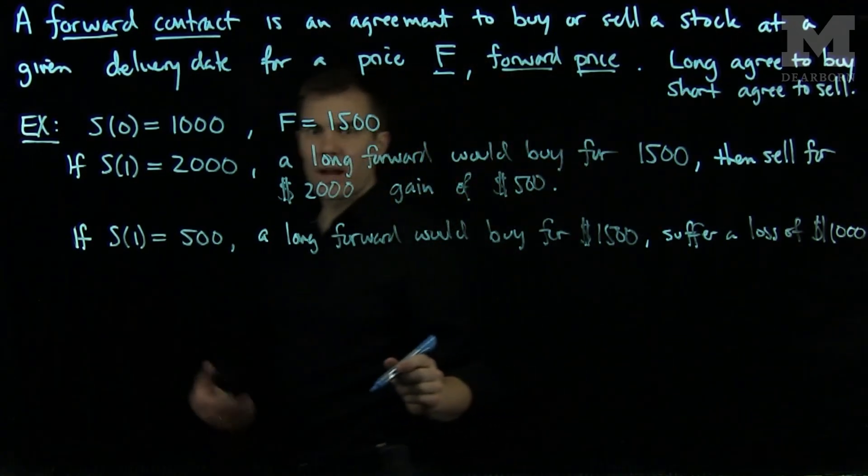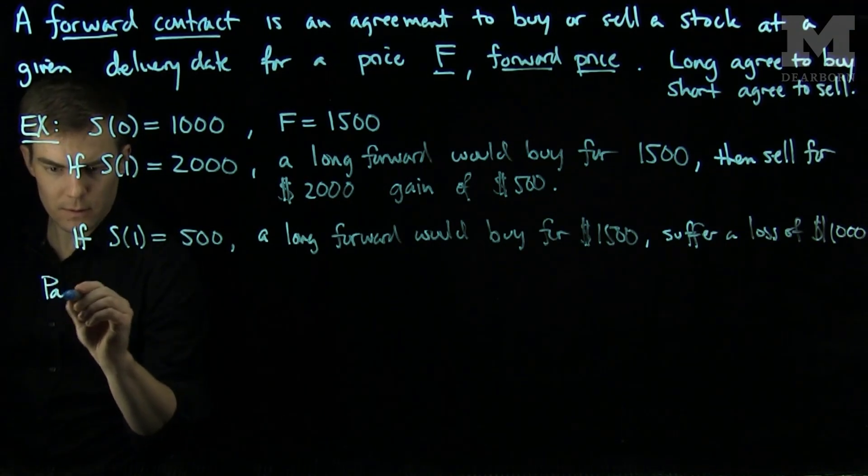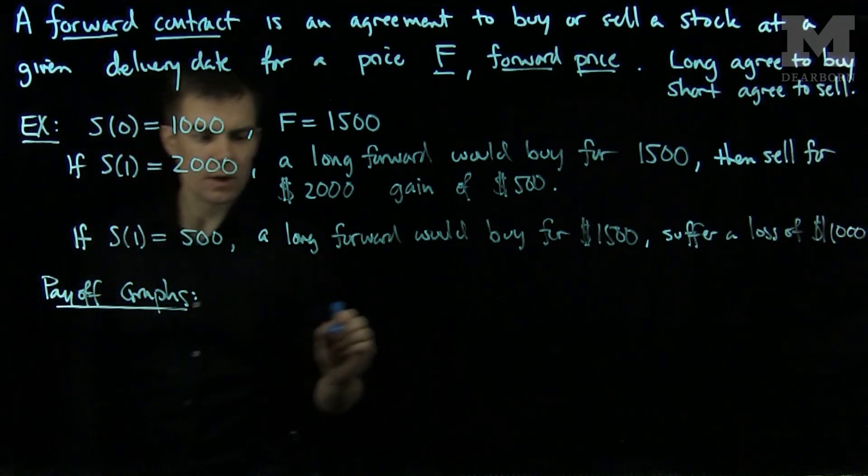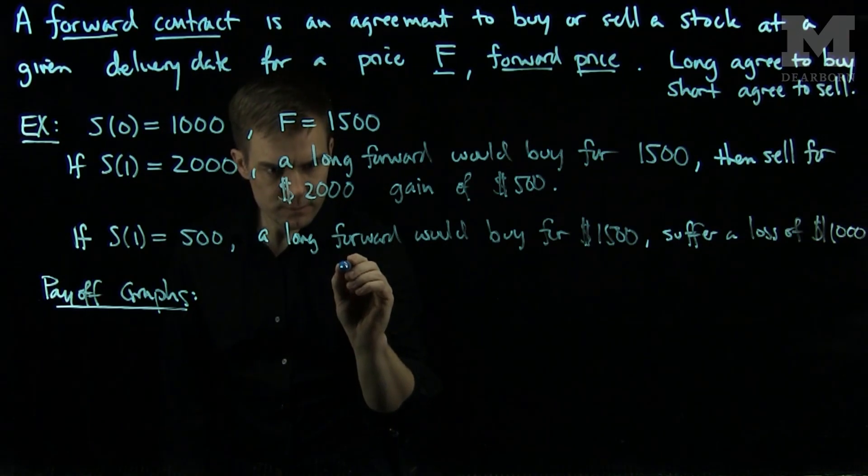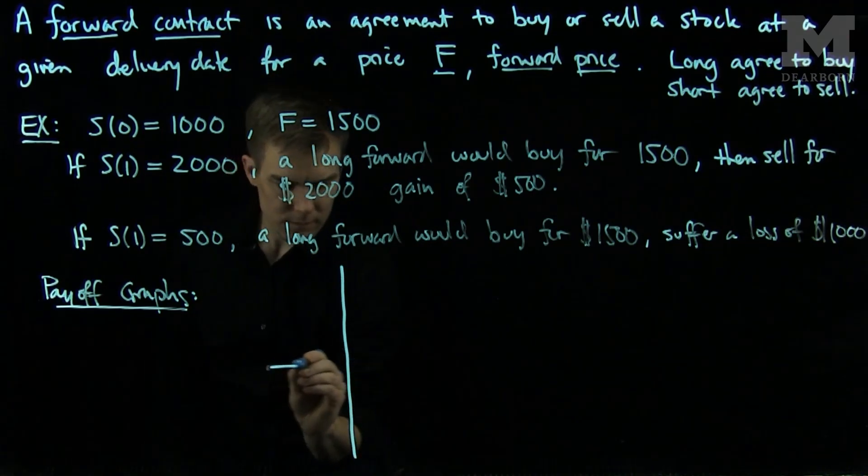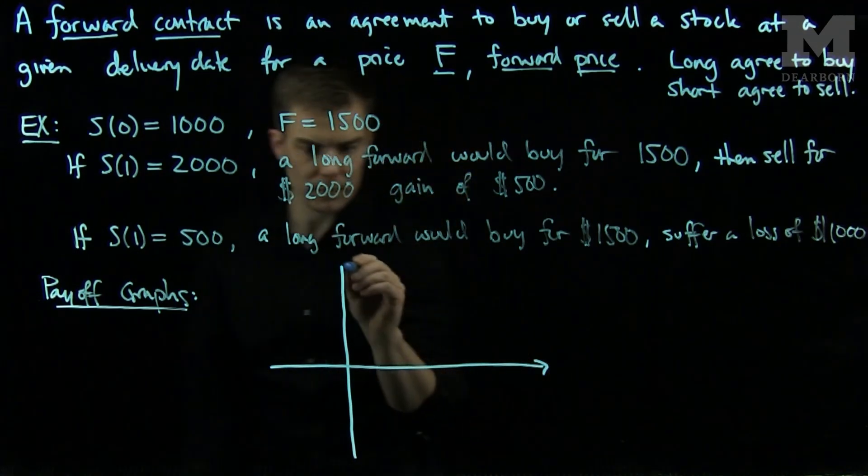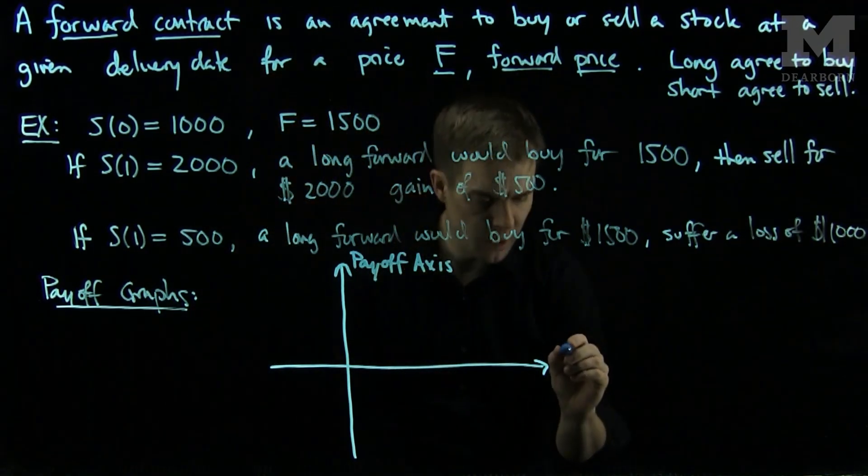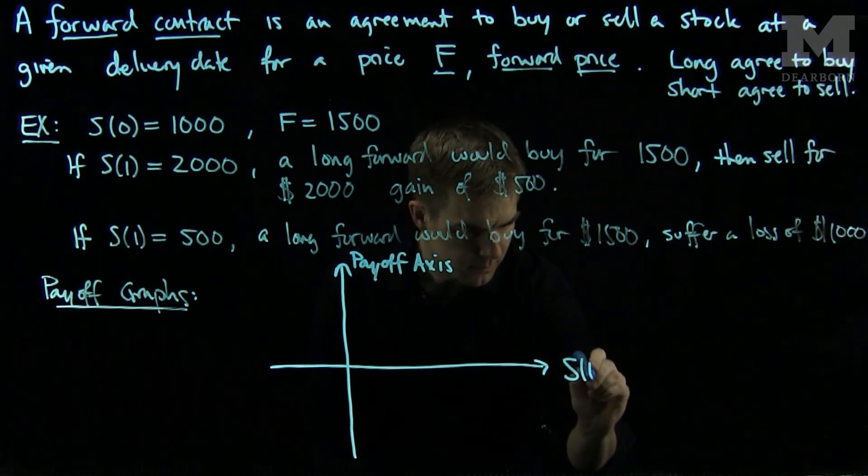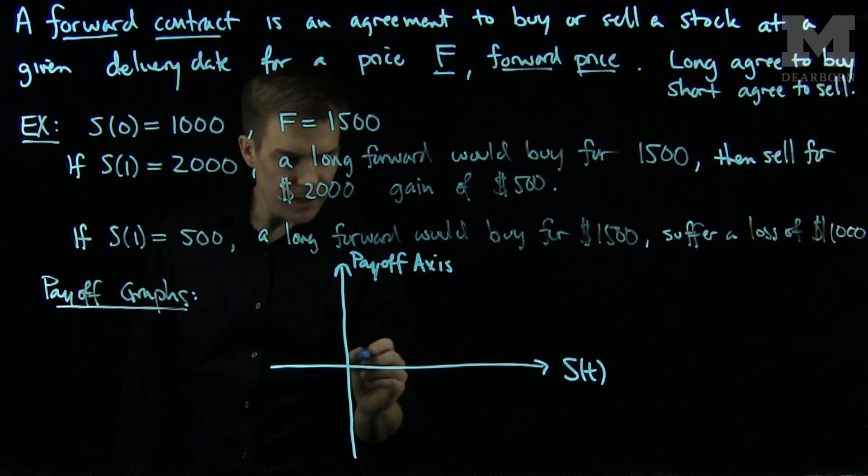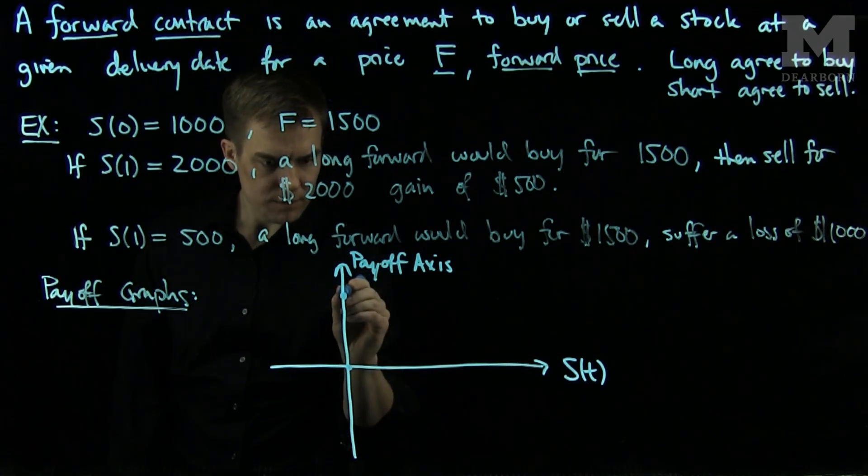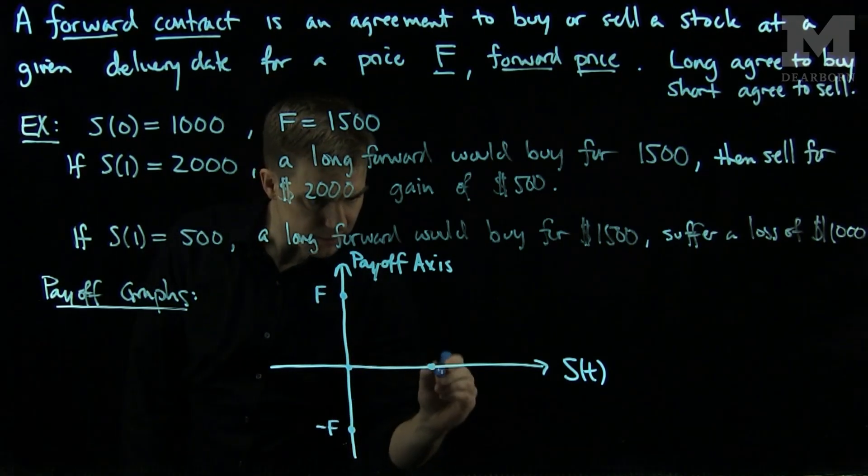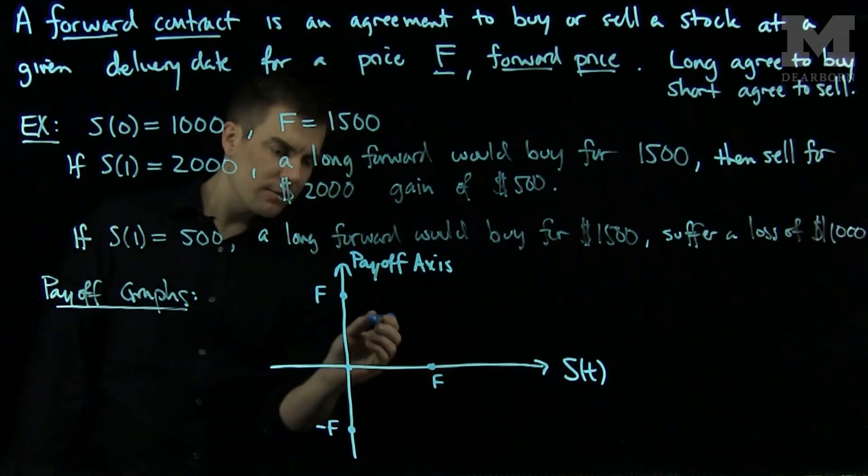Now, what we can do is we can plot the payoff for these contracts. This will be our payoff axis and this will be our price axis. So let's suppose that the price is zero and the forward price is F, and I'll put a negative F over here and an F over here.